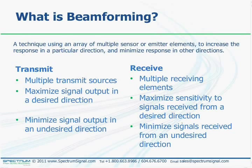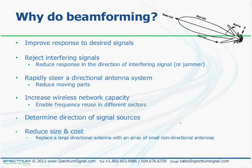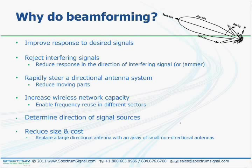So why would you want to do beamforming? First, to improve the response to desired signals. You can reject interfering signals by reducing the response in the direction of the interferer, such as a jammer. You can electronically steer the antenna beam towards a target rapidly without moving the antenna, reducing moving parts. You can increase wireless network capacity by enabling frequency reuse in different sectors near a base station, and also do direction finding to determine the direction of signal sources. You can also reduce size and cost by replacing a large directional antenna with an array of smaller non-directional antennas.